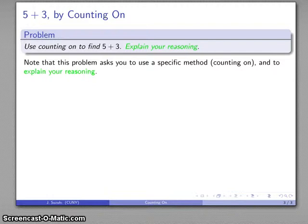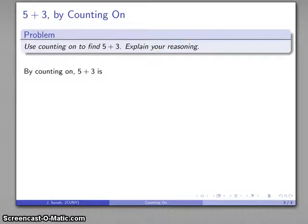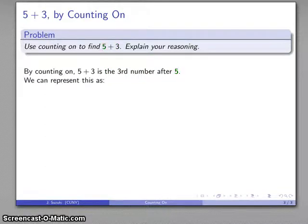So let's take a look at that: five plus three. Well, by the counting on algorithm that's the third number after five, so I could represent this as I'll start with five and let's see, I want the third number after it, so I'll count on six, seven, eight, and there's my third number.